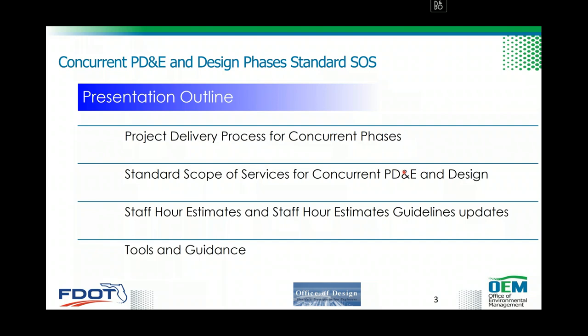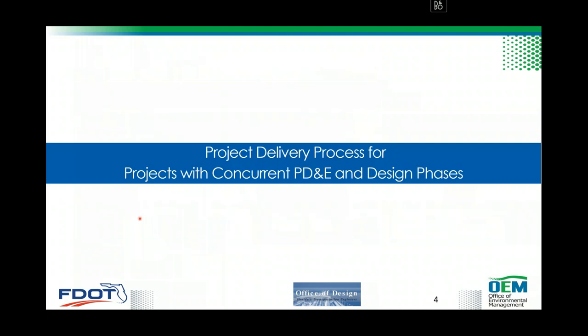The outline of today's training: we'll start talking about the project delivery process for concurrent phases — design and PD&E. Then we'll cover how we created the standard scope of services for concurrent PD&E and design, so you can develop a scope for your project with both phases combined. Then we'll move to staff hours estimates and estimation guidelines, how they were updated, and the updated forms. Lastly, we'll discuss tools and guidance to help develop the scope of services for concurrent phases.